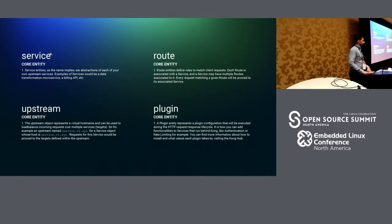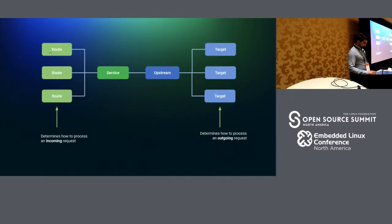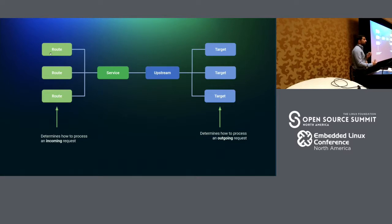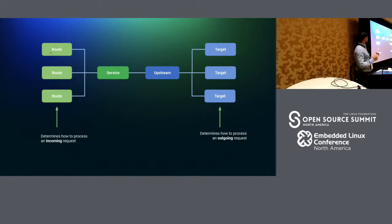For example, the central platform team can enforce consolidation on how security and observability are handled across the board without having to involve the actual teams. The route is the ingress. Those routes will point to a service. The service is an abstraction that contains a bunch of upstreams. The upstream can be different versions of our APIs — if this is a billing API, the service will be billing, the upstream is going to be v1, v2, v3. Each upstream has a target, and the target is the actual pod or instance we're going to be targeting when making the request.